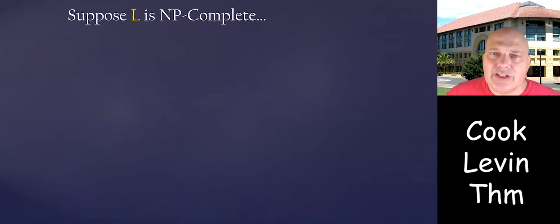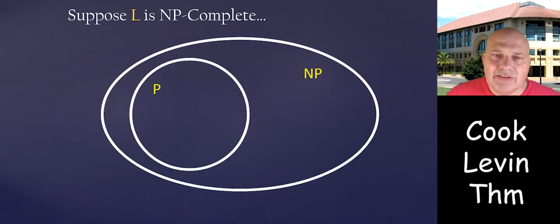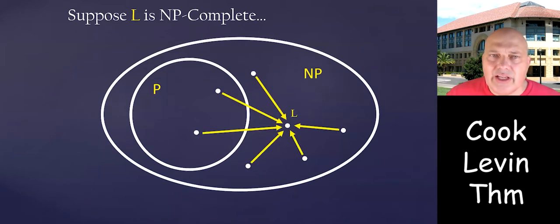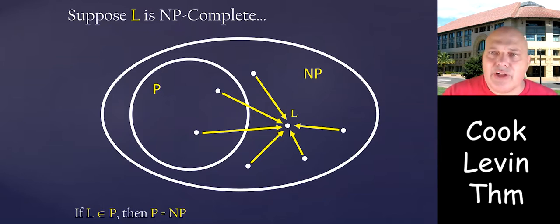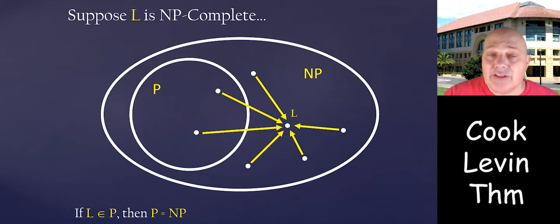Suppose language L is NP-complete. Every other language within NP is mapping reducible to L. What does it mean? It means that if L is in P, then every other language is in P, because every other language reduces to L, which is in P. So then P equals NP. And if L is not in P, then P is definitely not equal to NP, because we saw a problem within NP that is not in P.